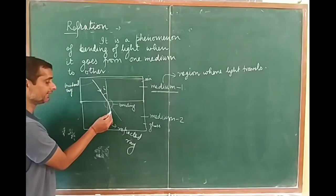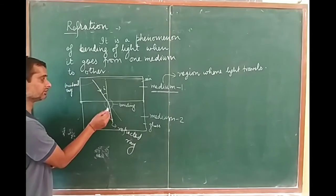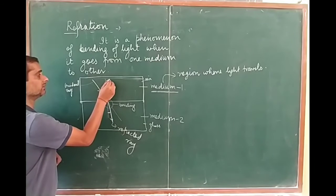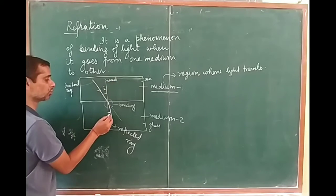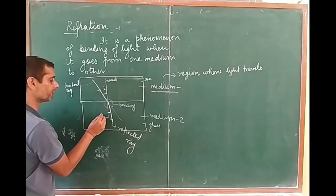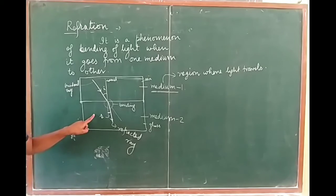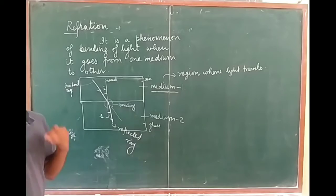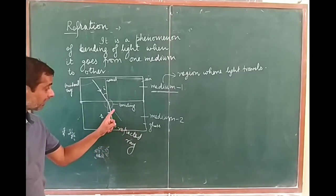The angle it makes with the normal is known as the angle of refraction. I represent it by this ray. So basically, what is refraction? Refraction is the phenomenon of bending of light.